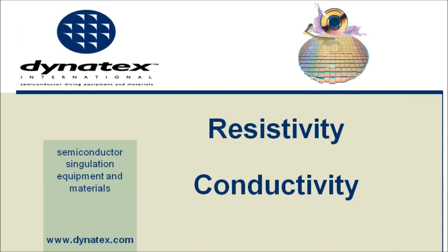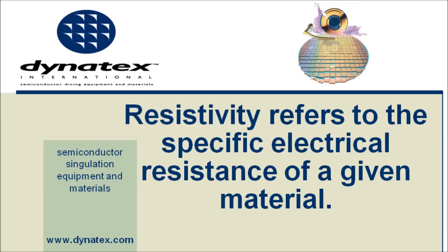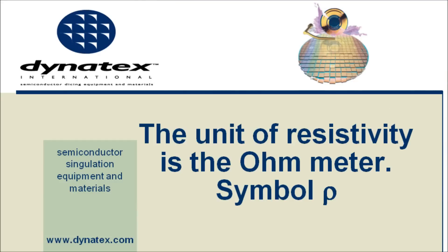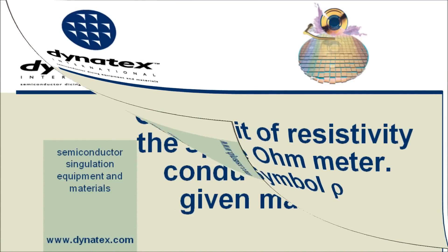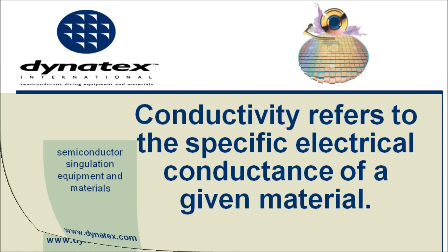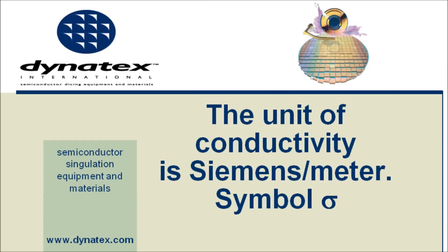Resistivity and conductivity are the correct terms. If you want to understand the difference between resistivity and resistance, and likewise conductivity and conductance, just send me an email and I will explain. Resistivity is the specific electrical resistance of a given material. The unit of resistivity is the ohm meter, with the Greek symbol rho. Conductivity is the specific electrical conductance of a given material. The unit of conductivity is the Siemens per meter, with the Greek letter sigma as its symbol.